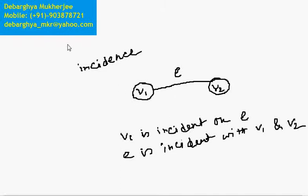The next concept is adjacent vertex. In this graph, V1 and V2 are called adjacent vertices because they are directly connected by one edge. So V1 is an adjacent vertex of V2, and V2 is an adjacent vertex of V1.